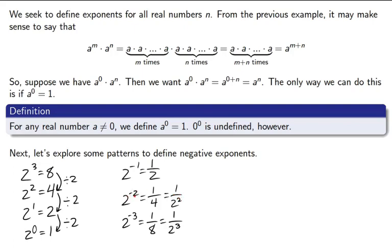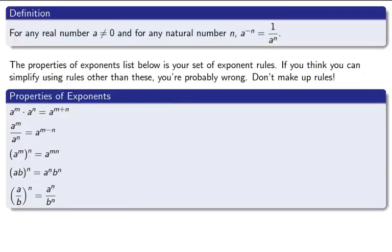For a negative exponent, we simply bring it to the denominator and make the exponent positive. And here's your official rule. As long as a is not 0, any negative exponent simply means bring it to the denominator and make the exponent positive.